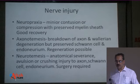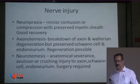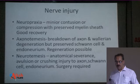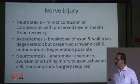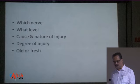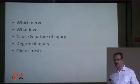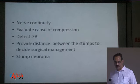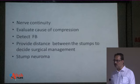In cases of neurotmesis, there is actual avulsion injury of the nerve fibers with anatomical severance — avulsion or crushing injury affecting the nerve, Schwann cells, and endoneurium. This usually requires surgery. Ultrasound provides information about which nerve is involved, at what level, the cause and nature of the injury, the degree of injury, and whether it is old or fresh.